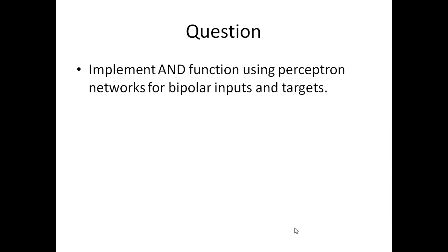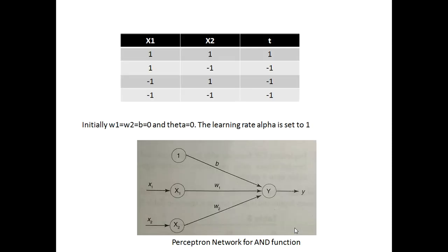First we need to know what bipolar inputs and bipolar targets are. Instead of using zero, we are using minus one. So we have only two types of inputs: plus one or minus one. If you have an AND gate and replace all zeros with minus one, you will have bipolar inputs. One remains one, but zero is replaced with minus one.